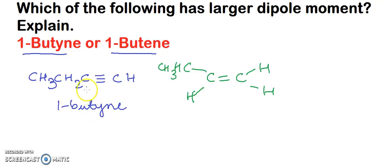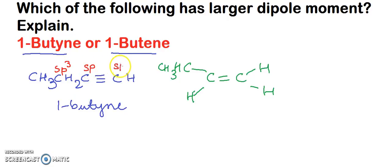Now see the directions of the dipole moments of the individual bonds in 1-butyne and 1-butene. In 1-butyne, this carbon atom is SP3 hybridized because it is a saturated carbon atom, while these carbons are SP hybridized. First find out the hybridization, then draw the direction of the dipole moments of individual bonds. The electronegativity of SP carbon is more than SP3 carbon, so the bond direction goes from the SP3 carbon atom towards the SP carbon atom.